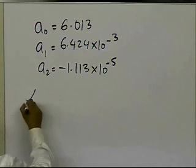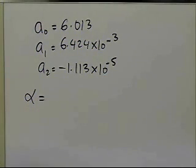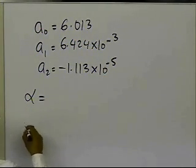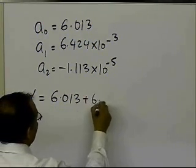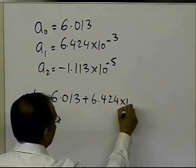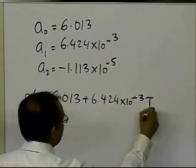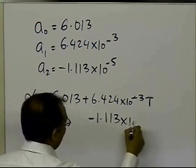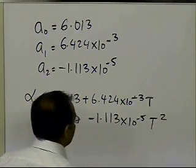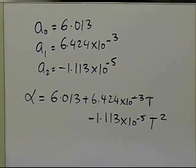What that means is that the second-order polynomial relationship between alpha, which is the thermal expansion coefficient, and temperature is 6.013 plus 6.424 times 10 to the power minus 3 times the temperature, minus 1.113 times 10 to the power minus 5 times temperature squared. That's the second-order polynomial regression model we've just found.